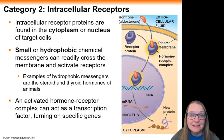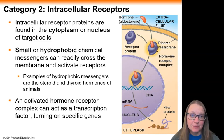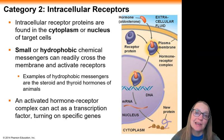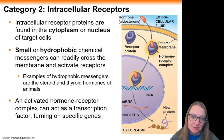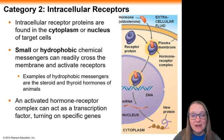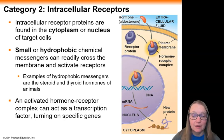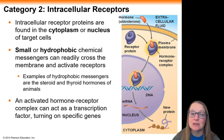A less common example of a receptor that participates in cell signaling is the intracellular receptor. These, instead of being embedded in the membrane of the cell, are actually located floating around in the cytoplasm or even all the way in the nucleus of the target cell.